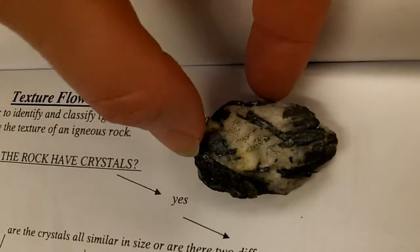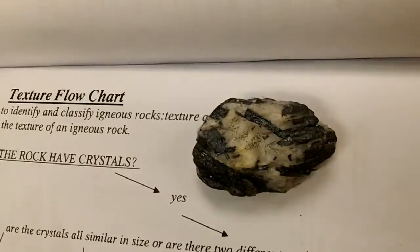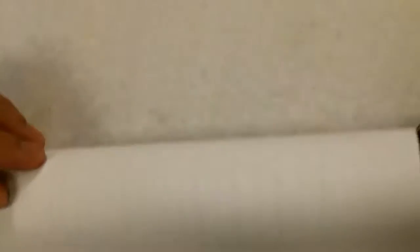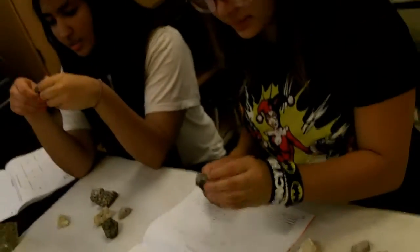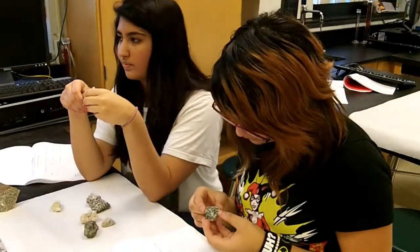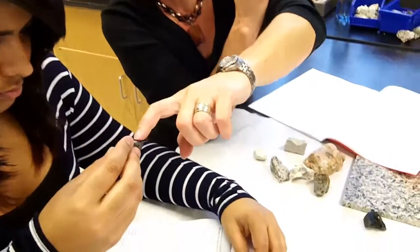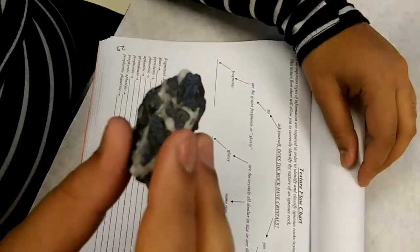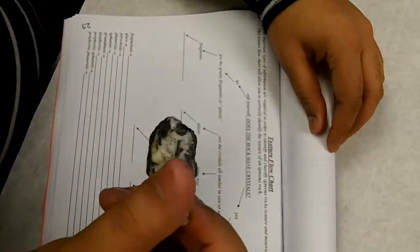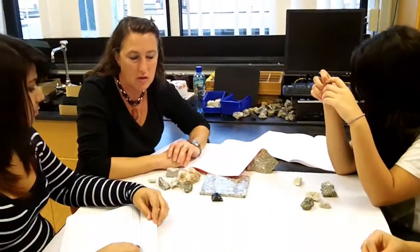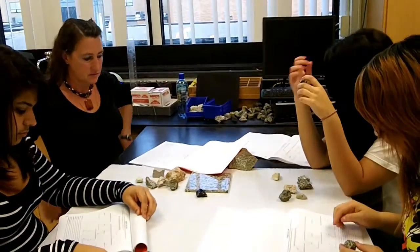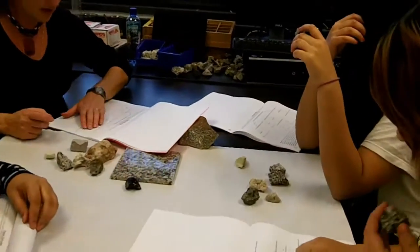We're seeing some black or dark-colored gray pieces and some white pieces, and they look like — if you think about pieces in a jigsaw puzzle — they're grown together. They interlock with each other. Those would be the crystals we're looking at. So on our flowchart, we go to 'yes, it has crystals.' What's our second question? Are the crystals all similar in size or are there two different grain sizes?